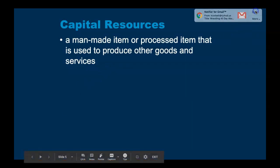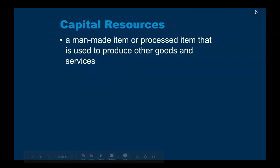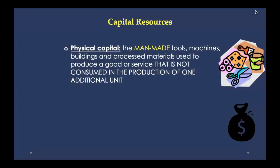Capital resources can be broken up into two subcategories. One is physical capital — those are man-made tools, machines, buildings, and processed materials used to produce a good or service. Here's something that should be in your study guide: add to that definition 'that is not consumed in the production of one additional unit.' That is really important.